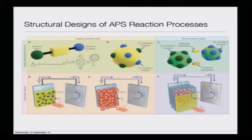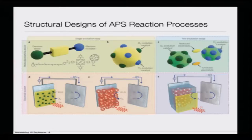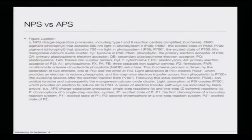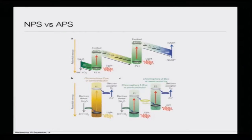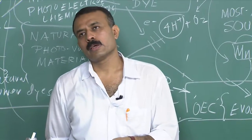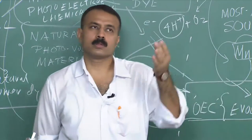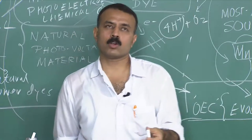For the two-excitation process with two different molecules, following design C, you see a two-step Z-scheme system: a mixture of semiconductor particles with attached hydrogen and oxygen evolving co-catalysts and a redox electrolyte couple. This is very interesting — you have two systems trying to emulate the Z-scheme with one chromophore and a second chromophore, plus the electrode system. This whole area has evolved at two different levels: developing high-end electrodes and developing molecules that will split water and absorb light.